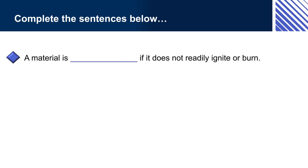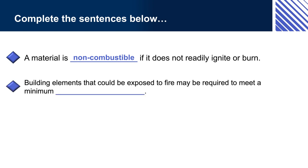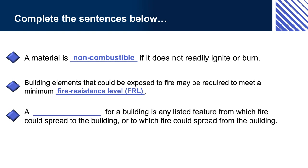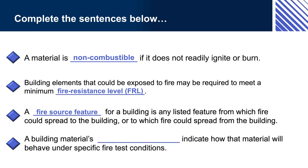Complete the sentences below. Option 1: A material is [non-combustible] if it does not readily ignite or burn. Option 2: Building elements that could be exposed to fire are required to meet a minimum [fire resistance level, FRL]. Option 3: A [fire source feature], for a building, is any feature from which fire can spread to the building, or to which fire could spread from the building. Option 4: A building material's [fire hazard properties] indicate how that material will behave under specific fire test conditions.